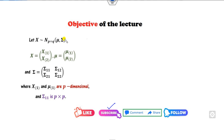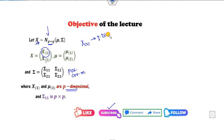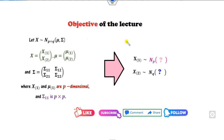So what is the objective of this lecture? Whenever you have a multivariate normal distribution x, where sigma is a positive covariance matrix, x1 is of p dimension and x2 is of q dimension — making x of p+q dimension. We know x follows a multivariate normal distribution, and the question is: what will be the distribution of x1 and x2, that is, the marginal density function? The objective is to find those marginal densities, which distribution they follow, and what their mean and covariance matrices are.